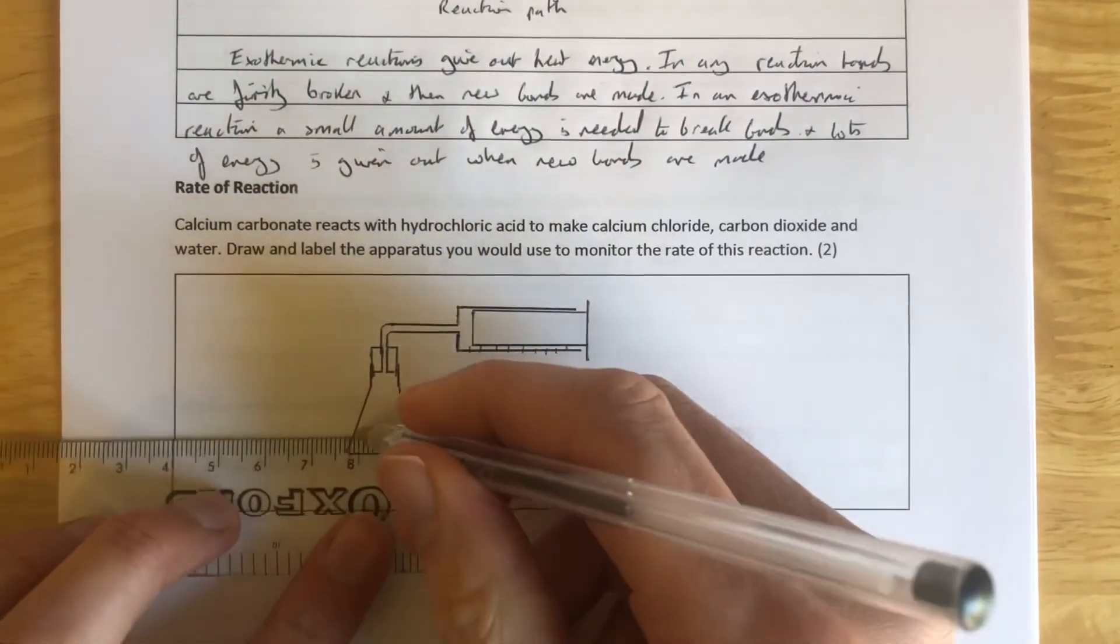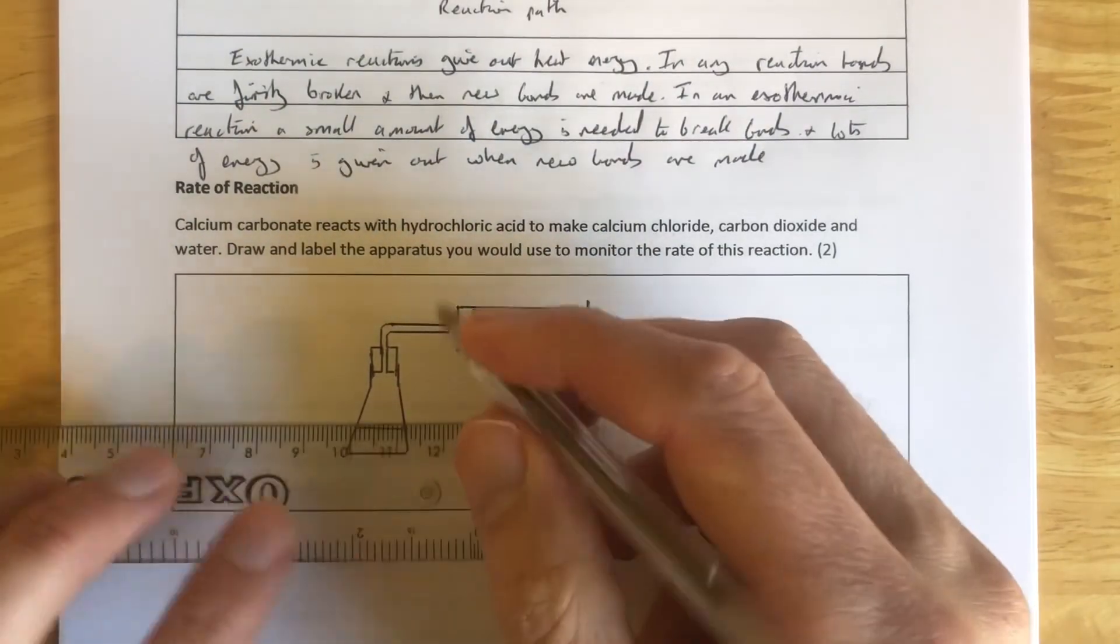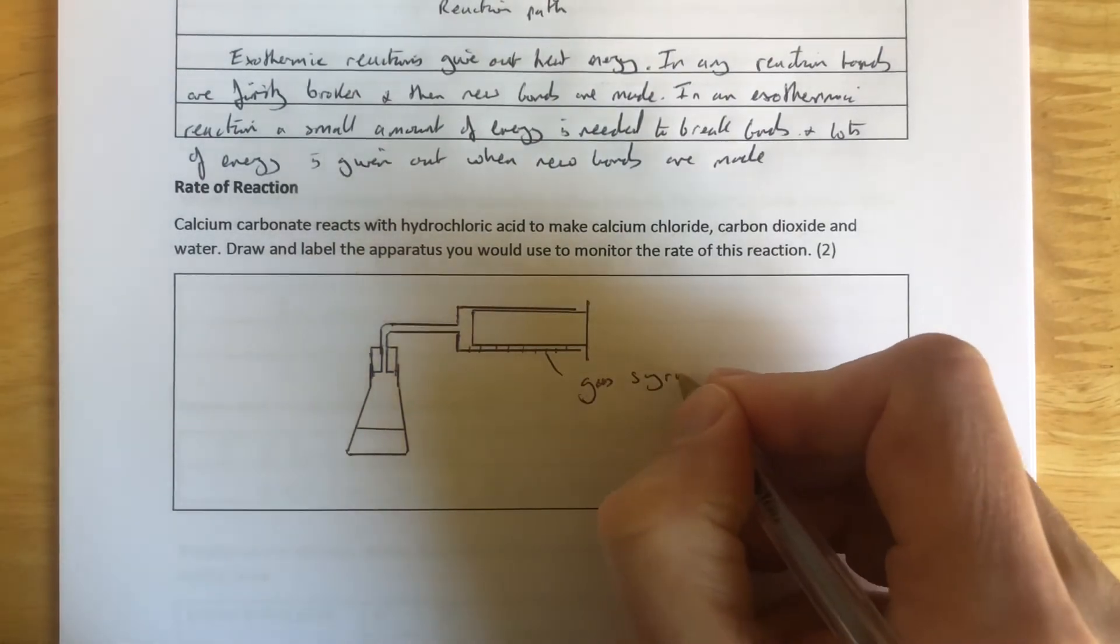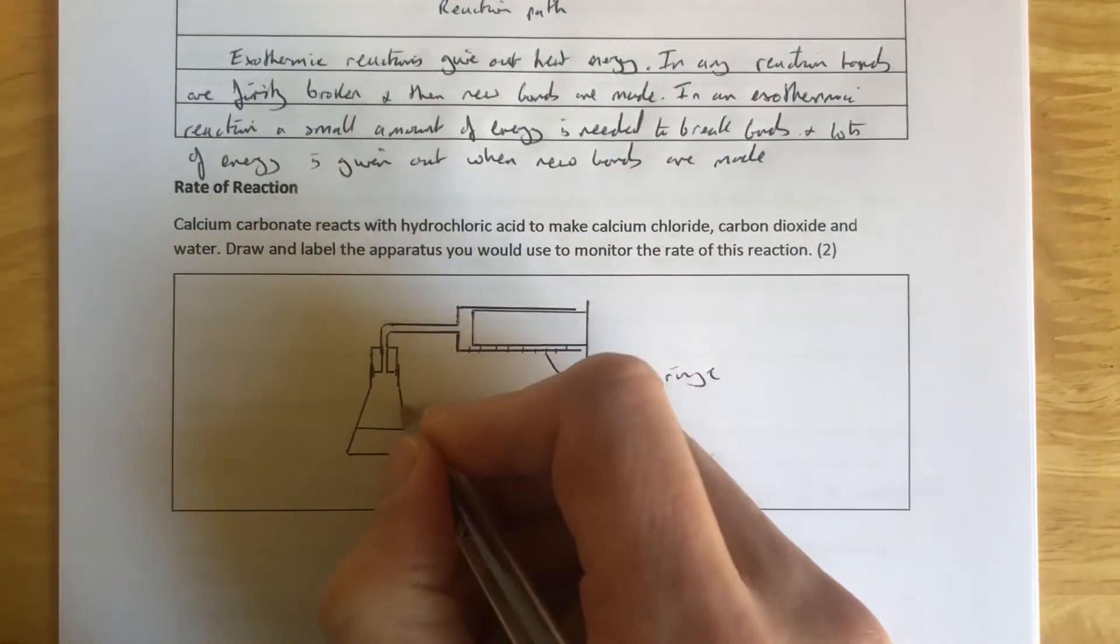So let's just label all this up now. So we've got our gas syringe here, and we've got our conical flask.